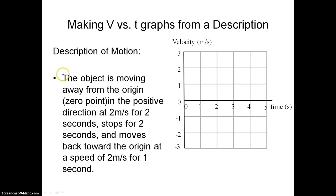So let's say you're given the description of the motion that an object underwent and you had to make a velocity versus time graph. So let's read through this. It says the object is moving away from the origin, which is the zero point, in the positive direction at 2 meters per second.